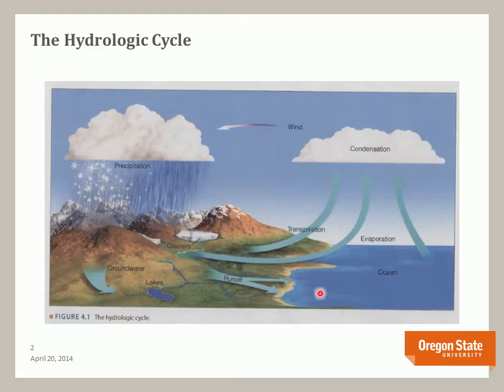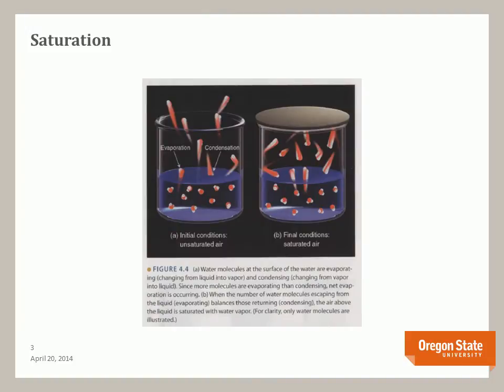Note also that water can be stored in different reservoirs — in oceans, rivers, lakes, and glaciers. This diagram shows a model for testing the idea of saturation. In state A, some water molecules have enough thermal energy to escape the water surface and evaporate, while at the same time some water molecules lose energy and condense back to the surface. In state B, when the number of molecules evaporating equals the number condensing, the air above the liquid is saturated.